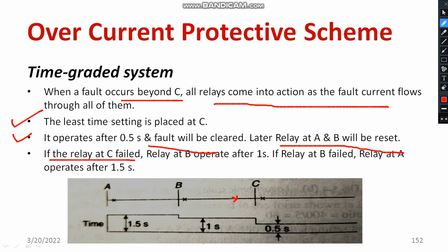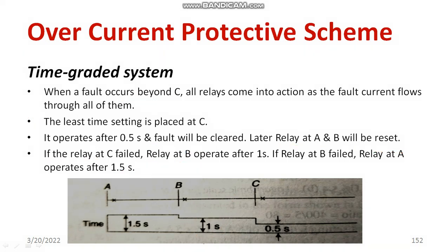If relay C fails, relay B operates after 1 second. Suppose relay B also fails — then relay A is going to operate at 1.5 seconds. The severity of the fault doesn't affect the operating time — that is a major issue. Suppose the fault is too severe; it will still operate only at that particular predefined time. So that is a major setback.